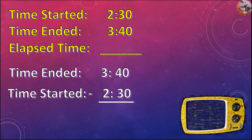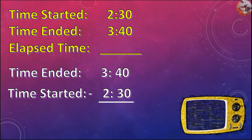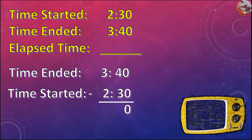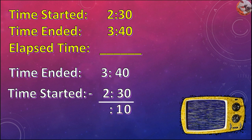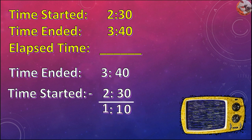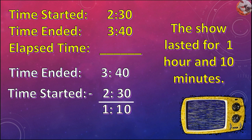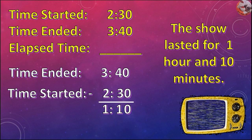Subtract the time started from the time ended. So, 0 minus 0 is 0, 4 minus 3 is 1, 3 minus 2 is 1. The show lasted for 1 hour and 10 minutes.